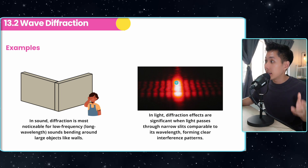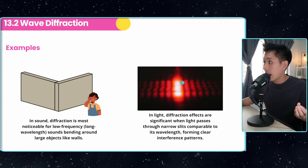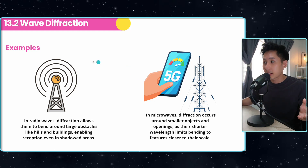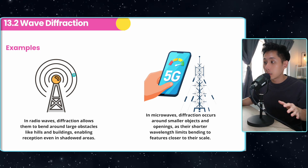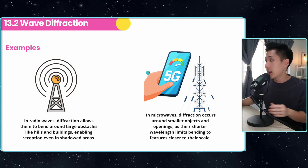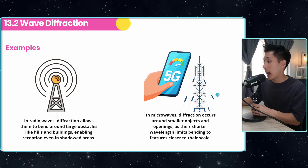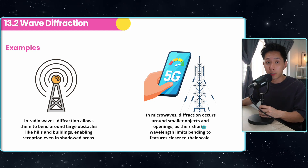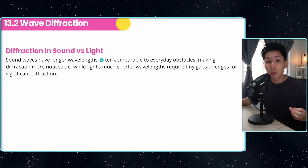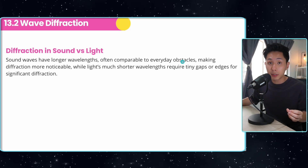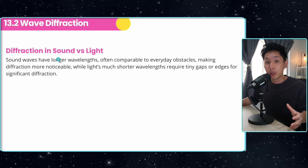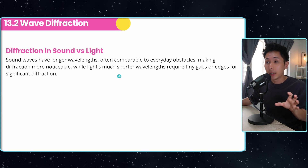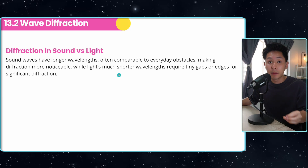You can see there are areas of bright fringes and areas of dark fringes. Some applications of wave diffraction: radio waves rely on diffraction to travel long distances. For microwaves, diffraction happens around smaller objects, as their shorter wavelength limits bending to features closer to their scale. Sound waves have longer wavelengths comparable to everyday obstacles, making their diffraction more noticeable, compared to light waves which have a shorter wavelength — it's very hard to find gaps approximately the size of their wavelength.